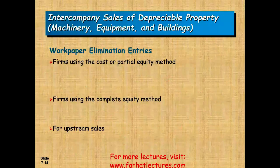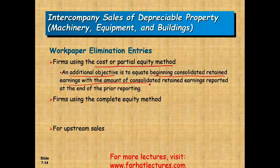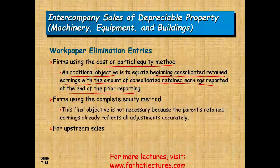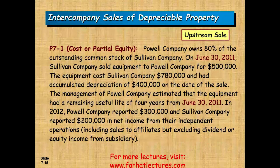Regarding the work paper elimination entries: for firms using the cost or partial equity method, an additional objective is to equate beginning consolidated retained earnings with the amount reported in the prior period. For firms using the complete equity method, this is not necessary because the parent's retained earnings already reflect all adjustments. For upstream sales, the entries will also serve to equate beginning NCI with prior NCI.